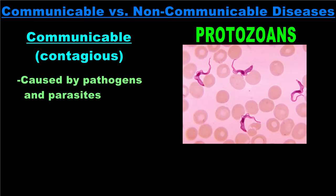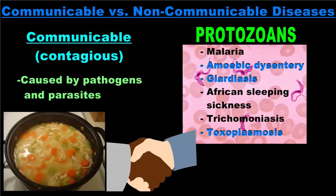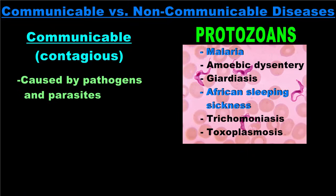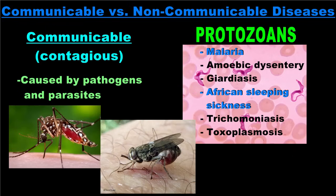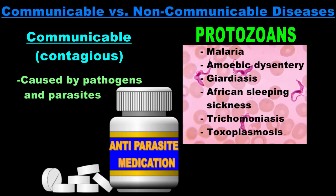Protozoans are another group of single-celled organisms that cause disease. You may not have heard of protozoans before, but you might be familiar with some of the illnesses they cause. Some protozoan infections, like amoebic dysentery, giardiasis, and toxoplasmosis, are spread through contaminated food, water, or from person-to-person contact. Others, like malaria and African sleeping sickness, are transmitted by insect bites. Trichomoniasis is sexually transmitted. These illnesses can be treated with anti-parasite medications.